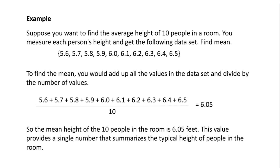Example: Suppose you want to find the average height of 10 people in a room. You measure each person's height and get the following data set. Find mean. The given data set is 5.6, 5.7, 5.8, 5.9, 6.0, 6.1, 6.2, 6.3, 6.4, 6.5. To find the mean, you would add up all the values in the data set and divide by the number of values: 5.6 plus 5.7 plus 5.8 plus 5.9 plus 6.0 plus 6.1 plus 6.2 plus 6.3 plus 6.4 plus 6.5, divided by 10, equals 6.05.